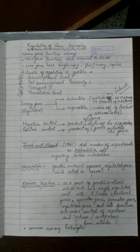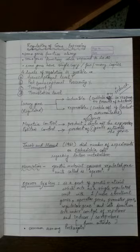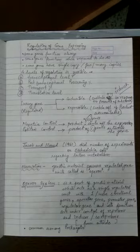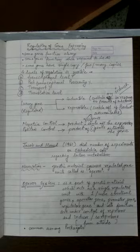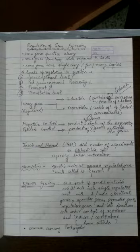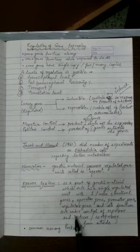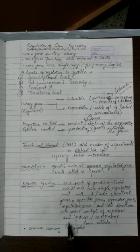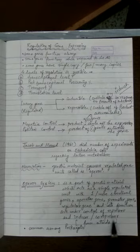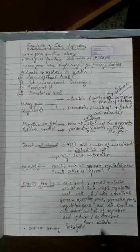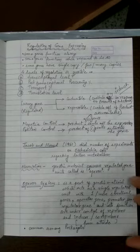Jacob and Monod in 1961 performed many experiments on Escherichia coli regarding the metabolism of lactose, and they observed the operon concept. An operon is a system of genetic material which acts as a single regulated unit with one or more structural genes, operator gene, promoter gene, regulator gene, and its functions are under the control of repressor and inducer or co-repressor.